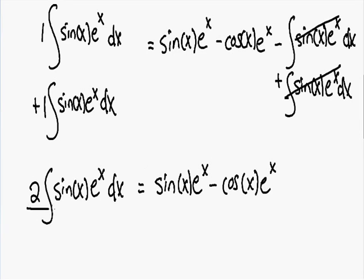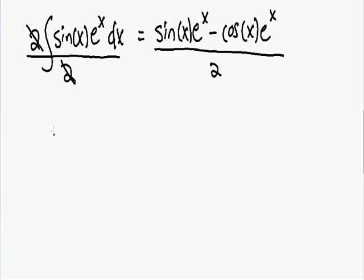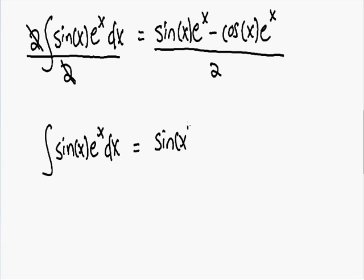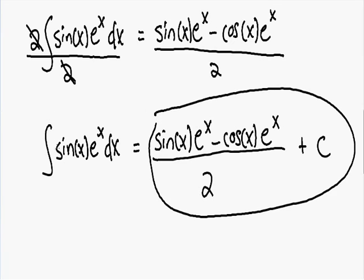Now I want to get rid of this two, so I'm going to divide both sides by two. On the left side, the twos cancel and we are left with our original integral: the integral of sine of x times e to the x dx. And on the right side, we have sine of x times e to the x minus cosine of x times e to the x, all divided by two. And we can't forget to add our constant plus C. So here is our solution: the integral of e to the x times sine of x equals sine of x times e to the x minus cosine of x times e to the x, all divided by two, plus C.